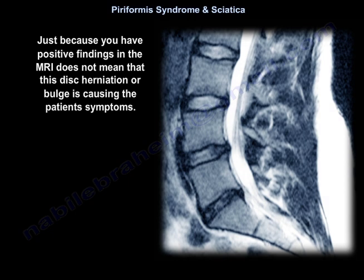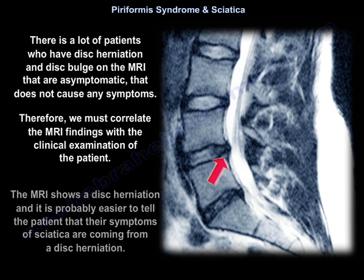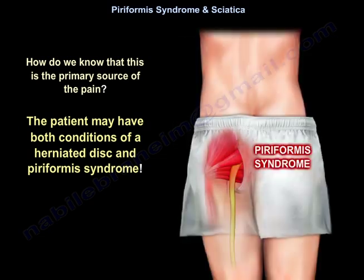Just because you have positive findings on the MRI, it does not mean the disc herniation or bulge is causing the patient's symptoms. There are a lot of patients that have disc herniation and disc bulge on MRI that are asymptomatic and do not cause any symptoms. Therefore, we must correlate the MRI findings with the clinical examination of the patient. The MRI shows disc herniation, and it is probably easier to tell the patient their symptoms of sciatica are coming from disc herniation — but how do we know this is the primary source of pain? The patient may have both conditions.